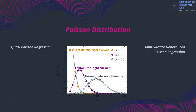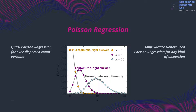Regarding data distribution, there are several types of Poisson regression. Two of them are quasi-Poisson regression and multivariate generalized Poisson regression. The quasi-Poisson regression is a generalization of the Poisson regression and is suitable to model an over-dispersed count variable. Meanwhile, the multivariate generalized Poisson regression is suitable for any kind of default dispersion.